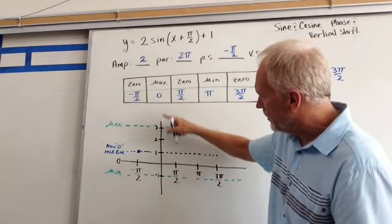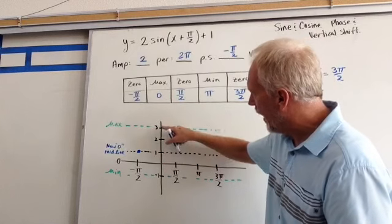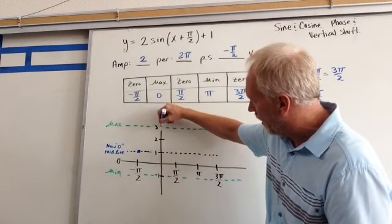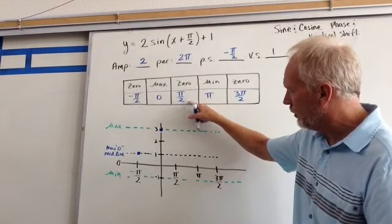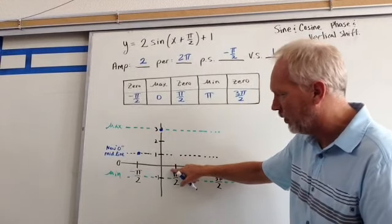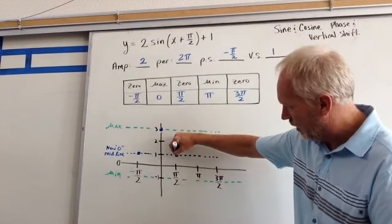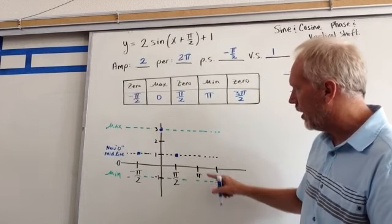The next point is at 0, which is a max, so my max is up top. Pi over 2 is back down to 0. Remember, it's not the real 0, it's your new mid line 0.